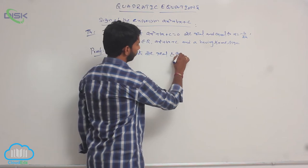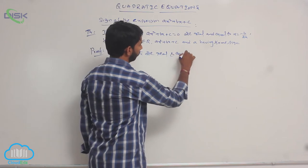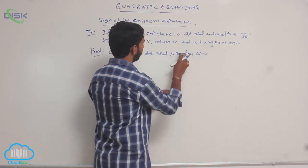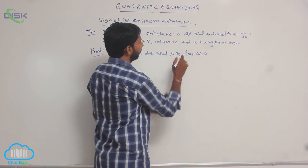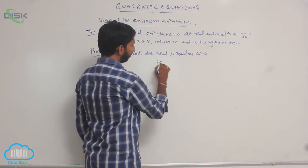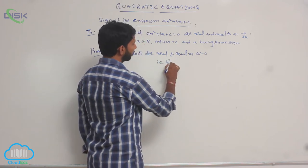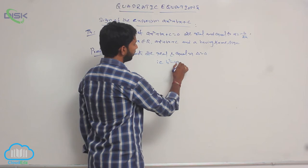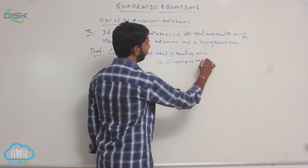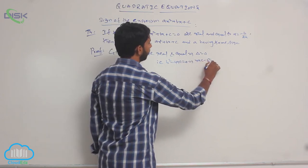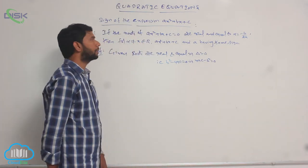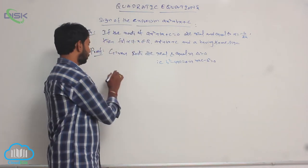Since roots are real and equal, this implies delta is equal to 0. That is, b² - 4ac = 0, which implies 4ac - b² = 0.